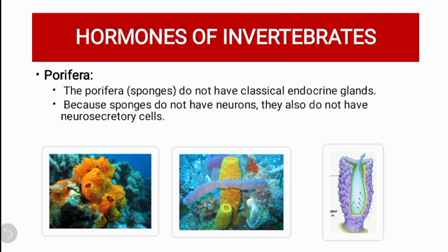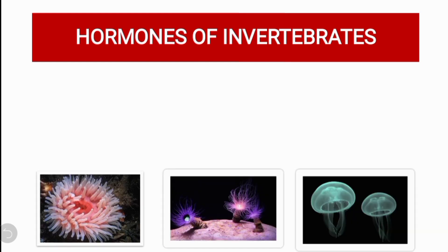If we talk about the Porifera, they do not contain any kind of endocrine gland because they do not have neurons and they also do not have neurosecretory cells. That is why they do not show a response, do not have an endocrine system, and do not have chemicals for their secretion.